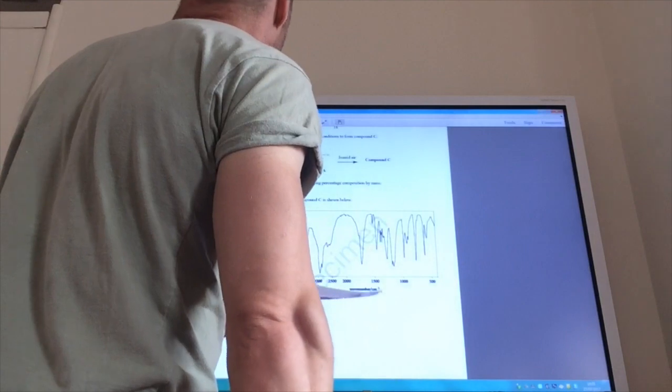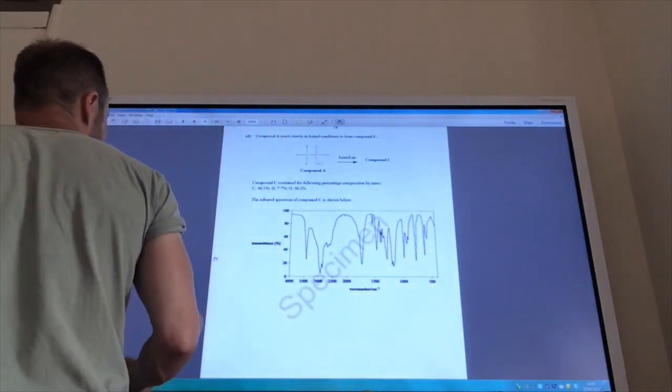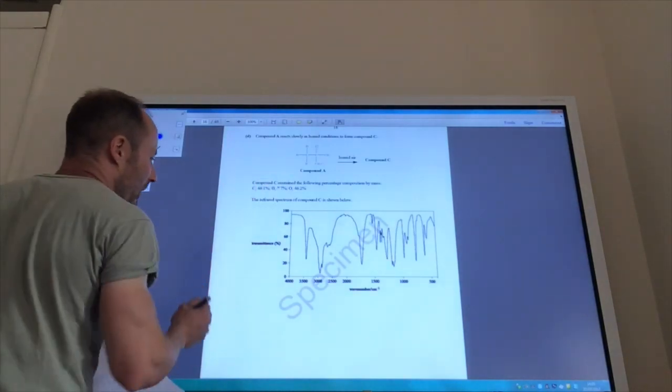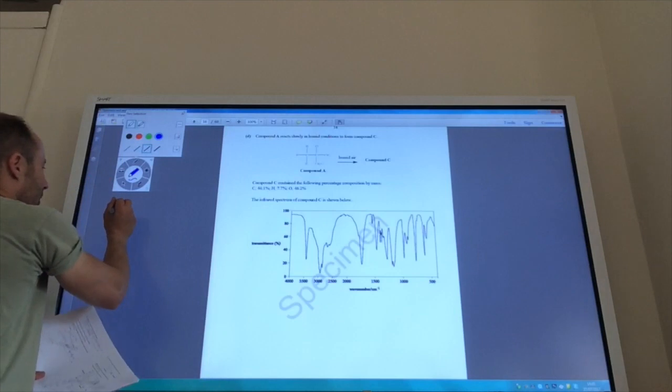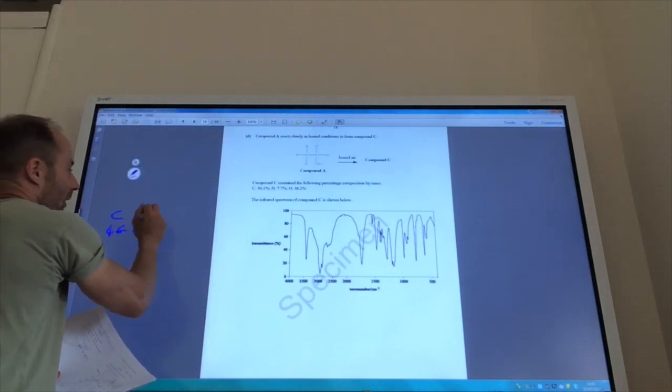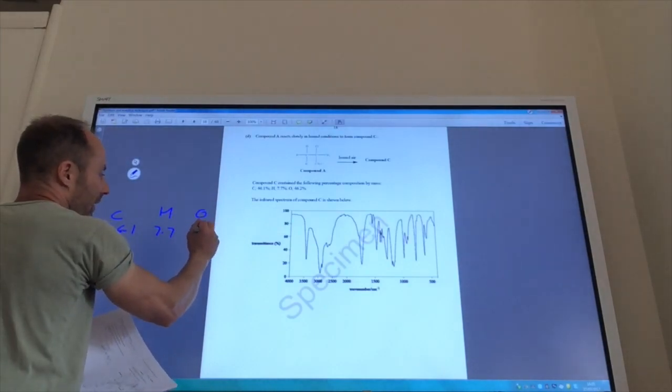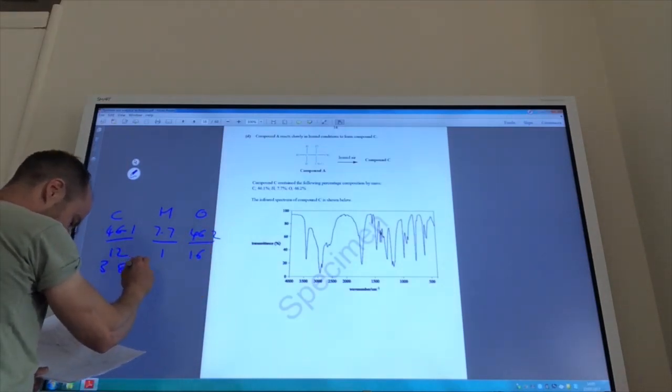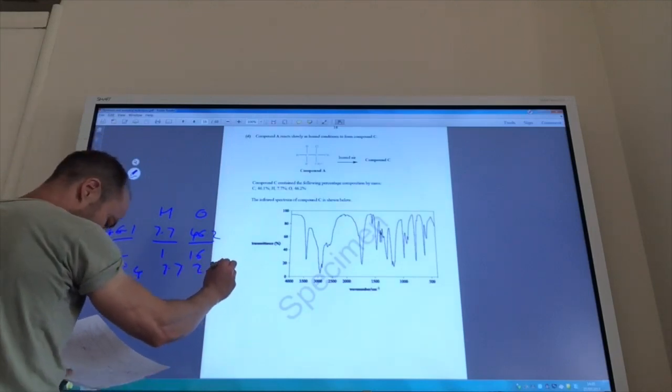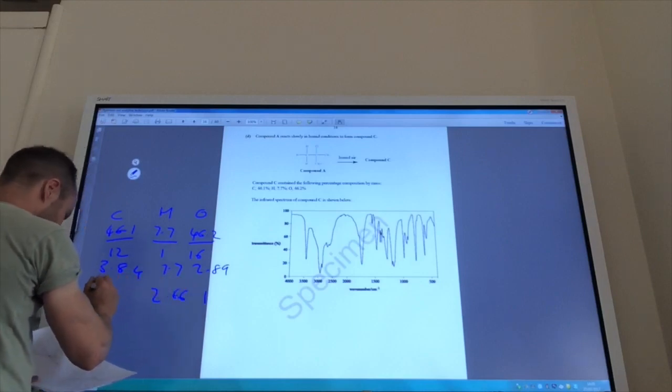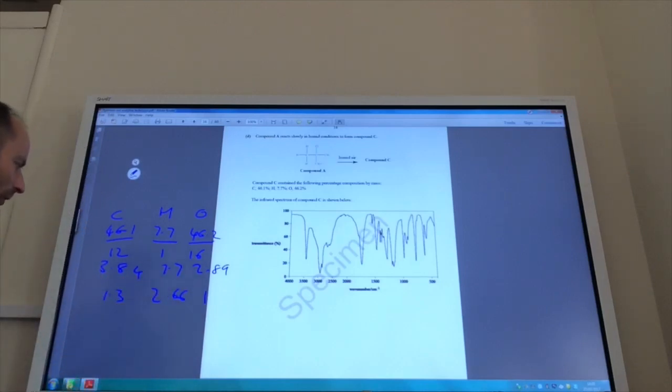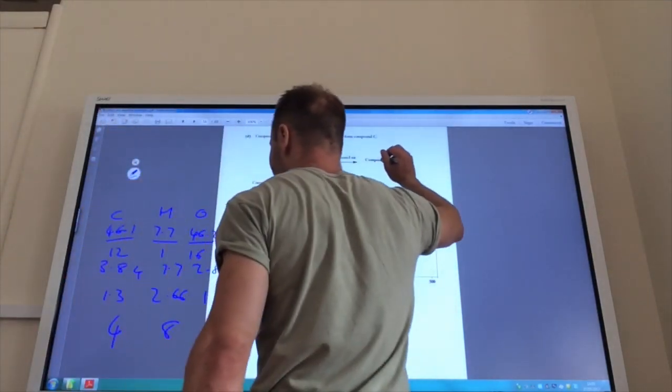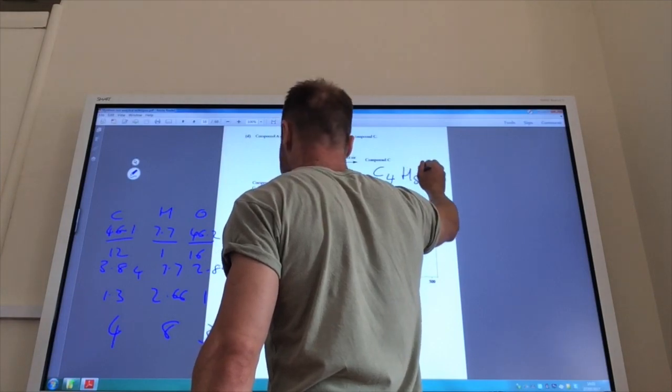Okay, so now I need to identify compound C. So, let's first of all work out the molecular formula, or the empirical formula. It's given me the percentage of composition by mass. So, you should be able to do it twice. C is 46.1, H is 7.7, and O is 46.2. Divided by the relative atomic mass of each, that becomes 3.84, 7.7, and 2.89. Divide by the smallest one, and I get that ratio. Obviously, I need to times all of these by 3 to give whole numbers. So, I get 3, 8, 4. So, the molecular formula is C4H8O3.